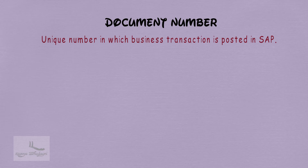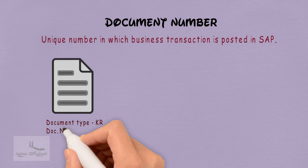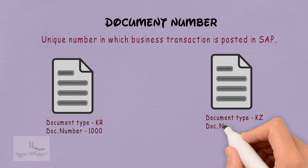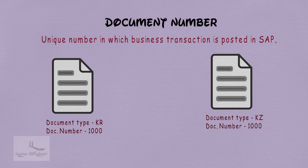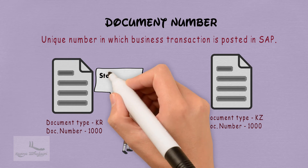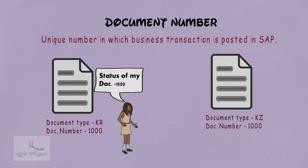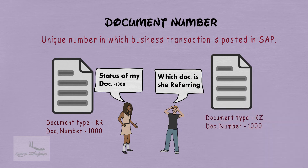In a company, if a Vendor Invoice Document is created with document number 1000, and then a Vendor Payment Document is also created with the same document number 1000, then whenever a customer queries about their transaction, it becomes very difficult to identify the correct document. This results in customer dissatisfaction and difficulty in the accounting process.